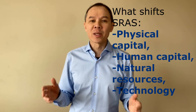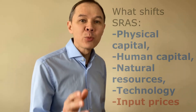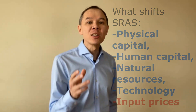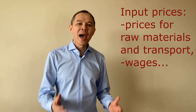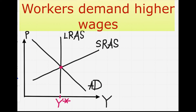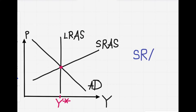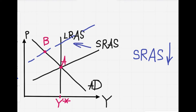The short-run aggregate supply also shifts with changes in any of the four factors of productivity. But there is one more factor that shifts the short-run aggregate supply only: input prices — prices for production inputs, raw materials, transport, and wages. For example, if workers demand higher wages, wages are labor costs for businesses. If businesses pay higher wages, they earn lower profits, production becomes more costly, businesses cut production, and the SRAS curve shifts to the left. The economy moves from point A to point B.